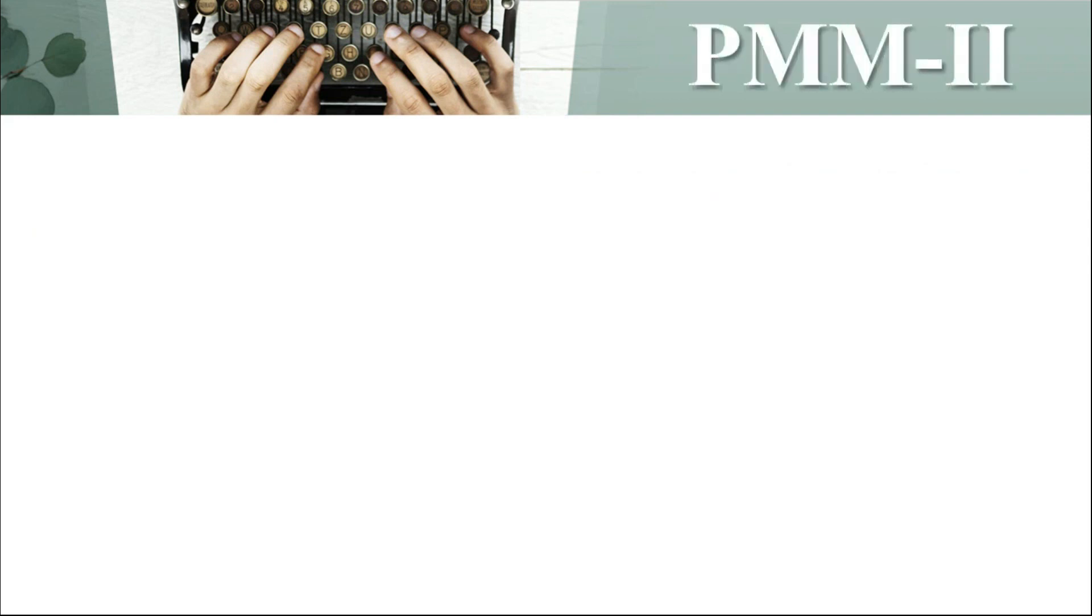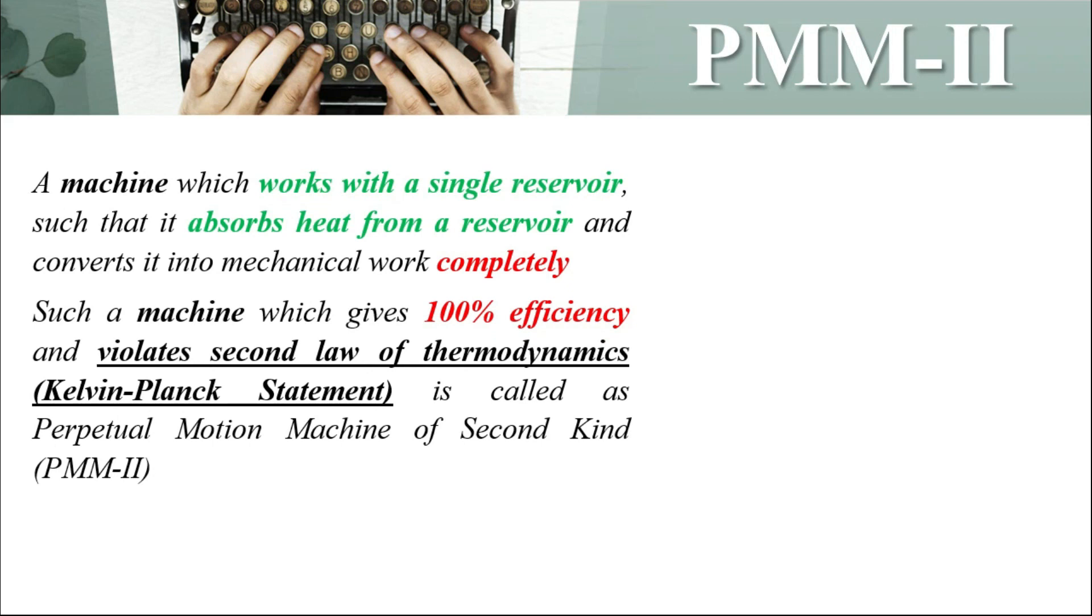Now what is PMM-II? By definition, a machine which works with a single reservoir such that it absorbs heat from a reservoir and converts it into mechanical work completely. Such a machine which gives 100% efficiency and violates the second law of thermodynamics is called a perpetual motion machine of second kind, that is PMM-II.